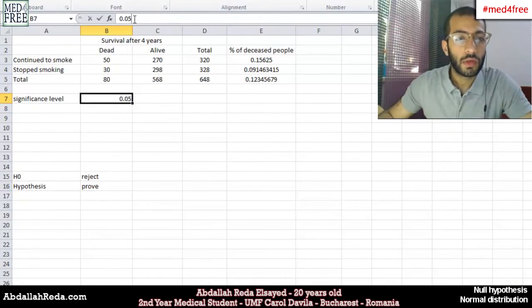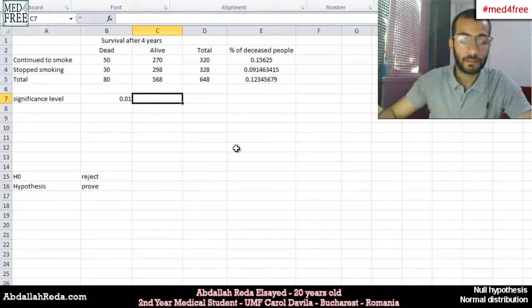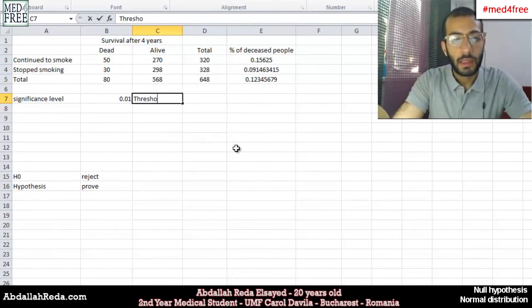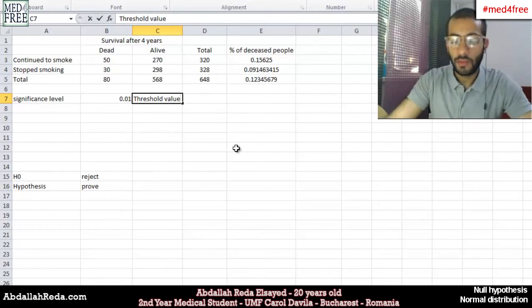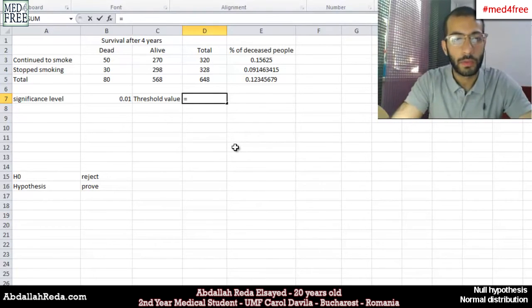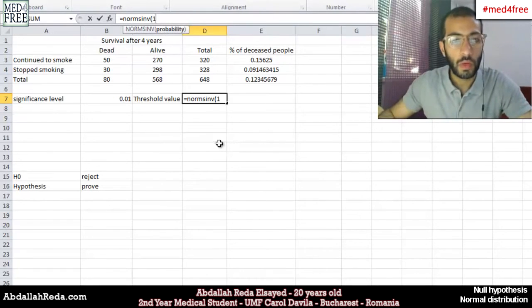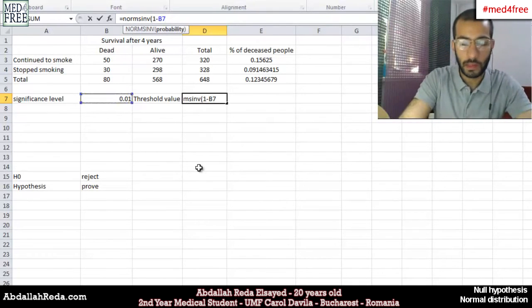Now, we'll start with the significance level of 0.01. So 1 minus 0.99. And we have the threshold value. And this is where we tell Excel that we are using normal distribution. So we'll write NORM.INV, which is the inverse of the normal distribution, 1 minus the significance level.